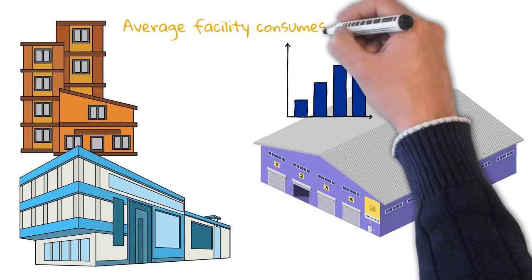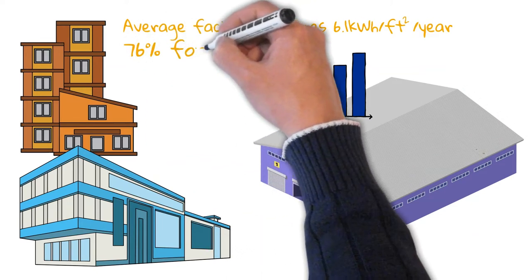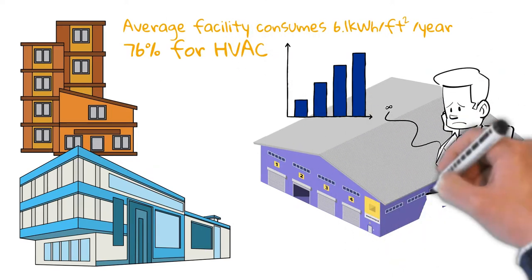In fact, the average warehouse facility in the United States now consumes 6.1 kilowatt hours of electricity per square foot annually, with 76% of that expenditure going directly to heating, ventilation, and air conditioning expenses.